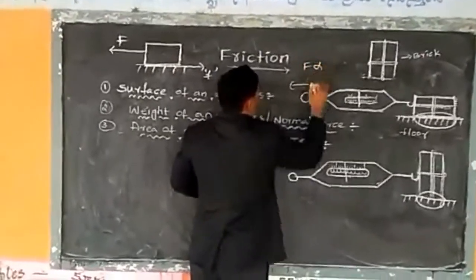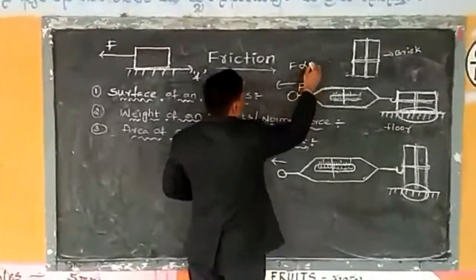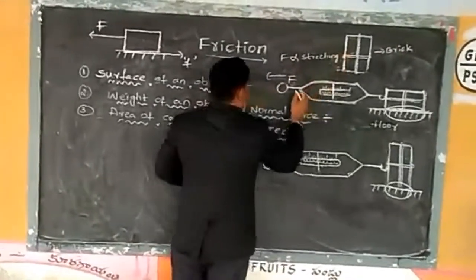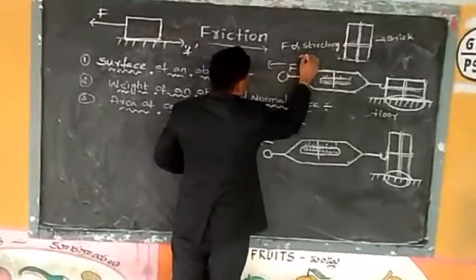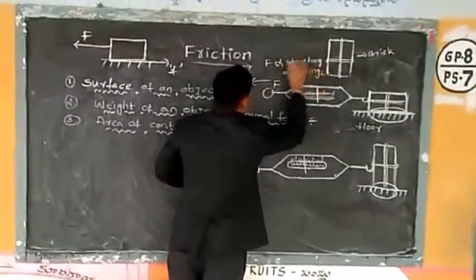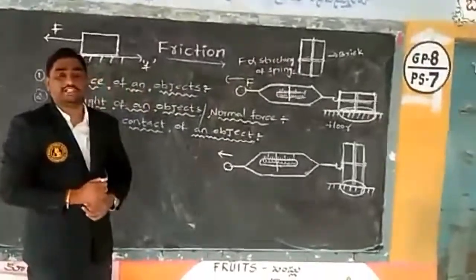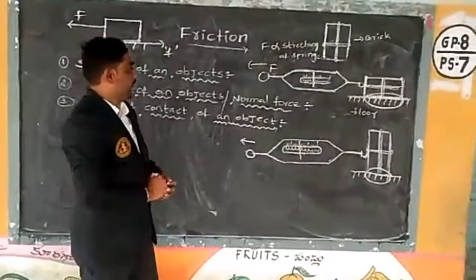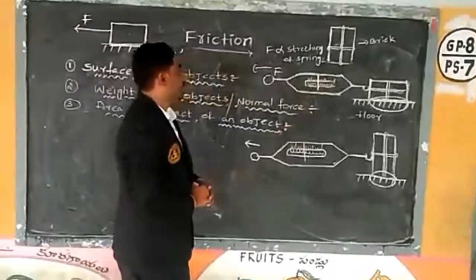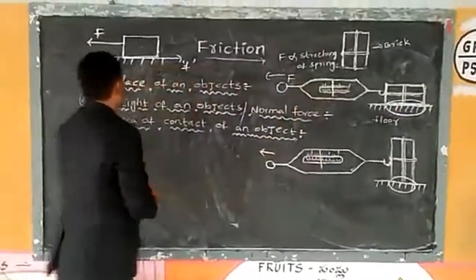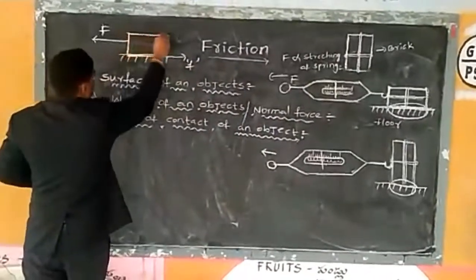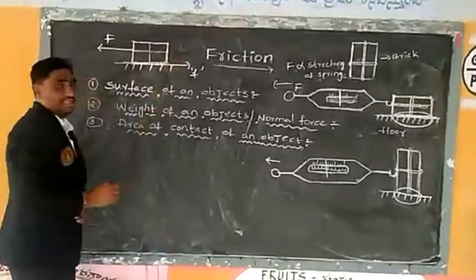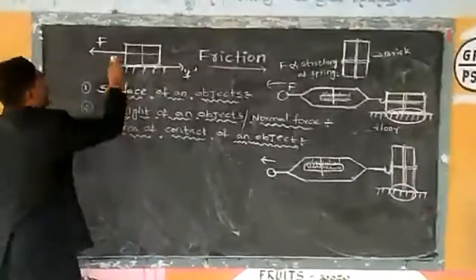The applied force F is directly proportional to the extension of the spring. Dear friends, when we pull a brick using a spring balance, two forces are acting on the brick. Let me draw a free body diagram. The applied force acts in one direction, and the frictional force acts opposite to the applied force.